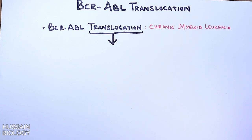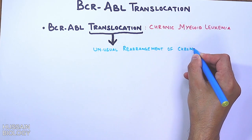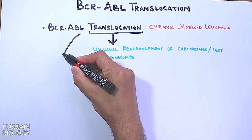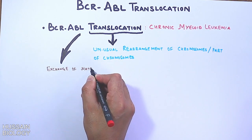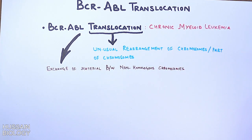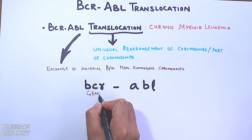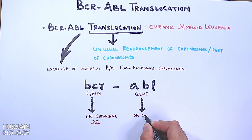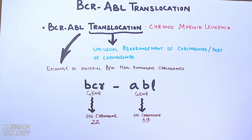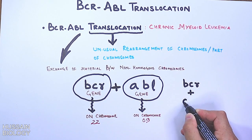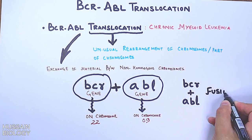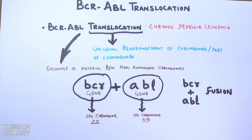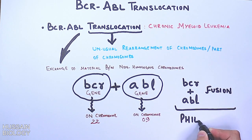In general, translocation is the unusual rearrangement of chromosomes or parts of chromosomes. In the case of BCR-ABL translocation, there is an exchange of materials between non-homologous chromosomes involving two genes: the BCR gene, present on chromosome 22, and the ABL gene, present on chromosome 9. When rearrangement takes place between chromosomes 22 and 9, a new chromosome is formed in which BCR and ABL genes are fused together. This new chromosome, which carries the BCR-ABL gene on its q arm, is termed the Philadelphia chromosome.